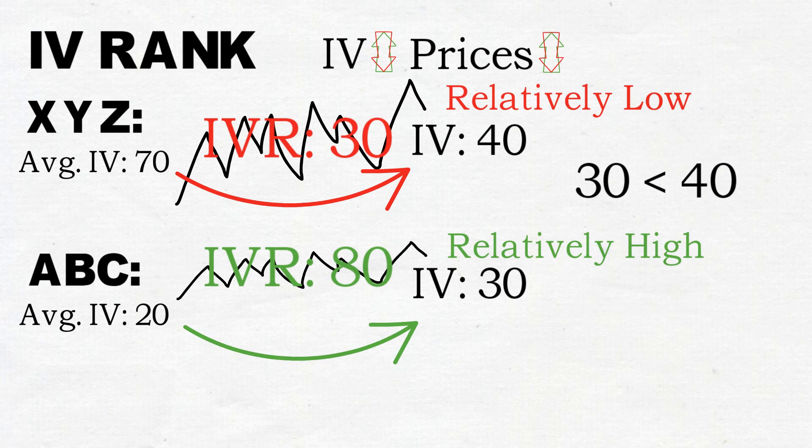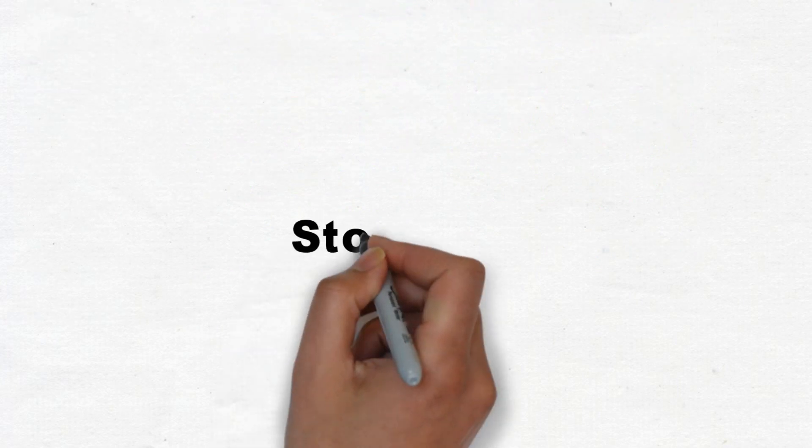IV rank is always a value between 0 and 100, 100 being the highest and 0 the lowest level of implied volatility over the past year. Here is a brief example.